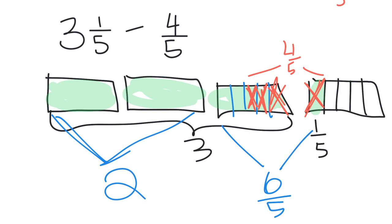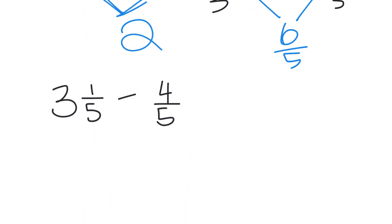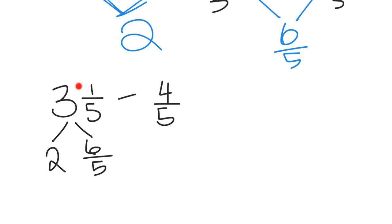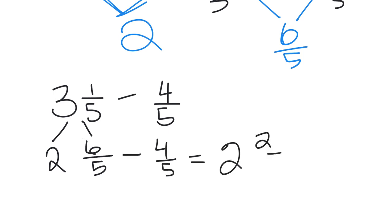Let's do this one last time, only this time we're going to represent this using numbers. We recognize that we did not have enough fifths to take away four-fifths. So I had to think about three and one-fifth as two wholes and six-fifths — because this one-fifth plus five-fifths gives me two wholes and six-fifths. Now I can take away my four-fifths, and that gives me two wholes and two-fifths left over.